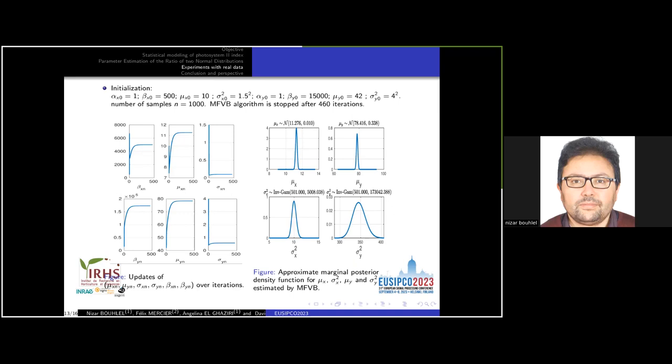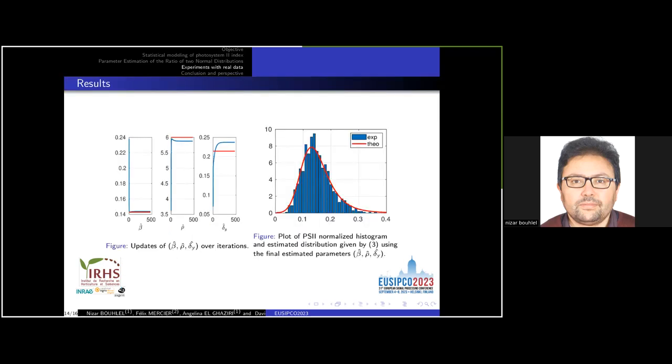Figure 3 shows the approximate posterior density functions for the four model parameters. The estimated parameters beta, rho, and delta Y over the iterations are shown in figure 4. The horizontal lines with the red color correspond to the true values of these parameters. The final values of these parameters are very close to the true values.